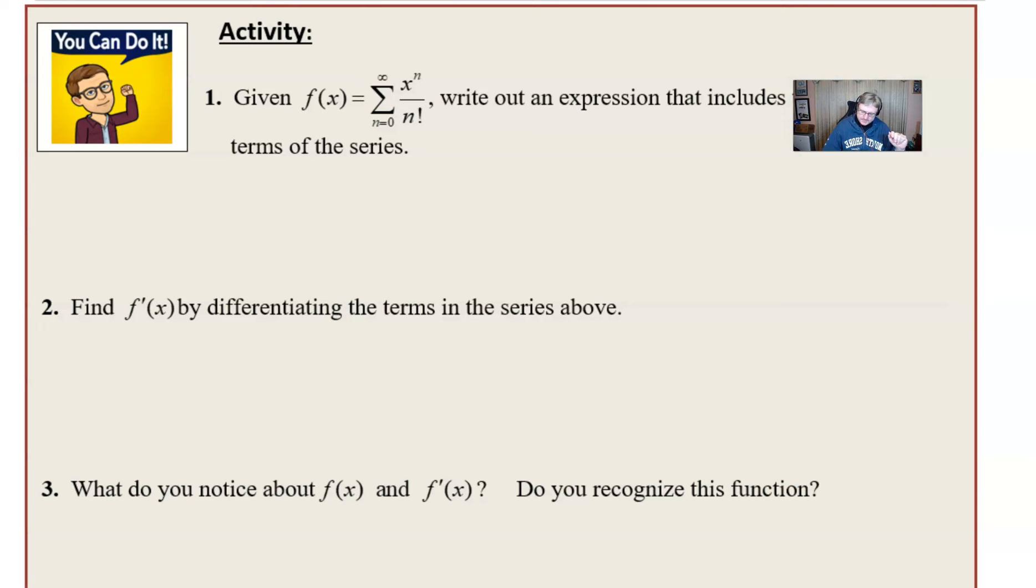Before we dive headfirst into example four, I've got a really fun activity. The best thing you could possibly do is read this through with me and then pause the video and see if you can find these three answers on your own, then resume the video and see how close you were. The activity is: given this particular power series, an infinite series with x to the n power over n factorial, thus it makes it a power series. Write out the expression that includes the first five terms of the series.